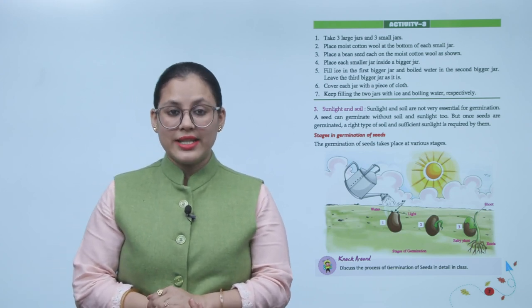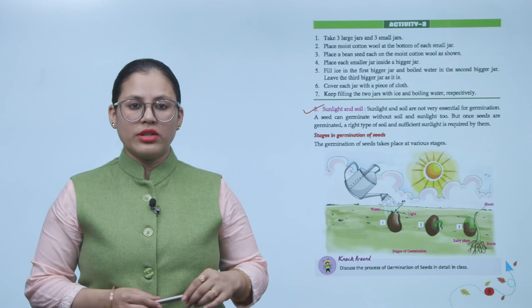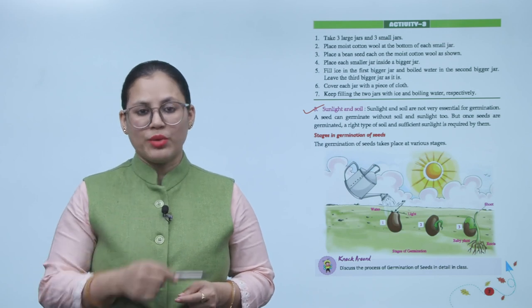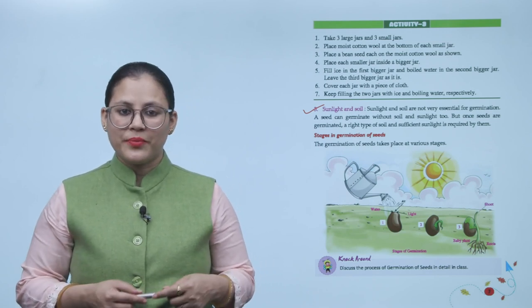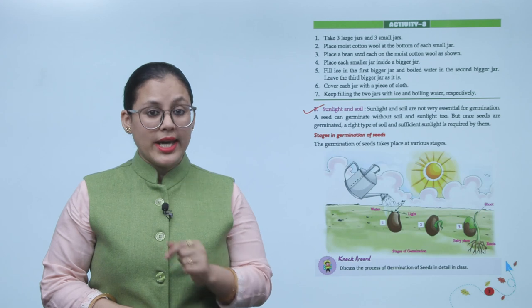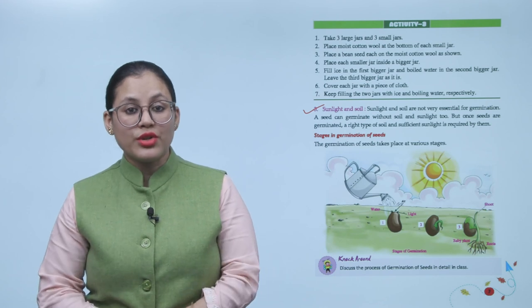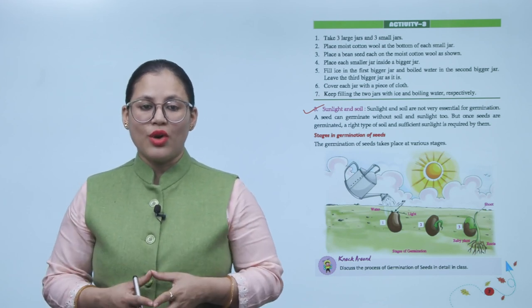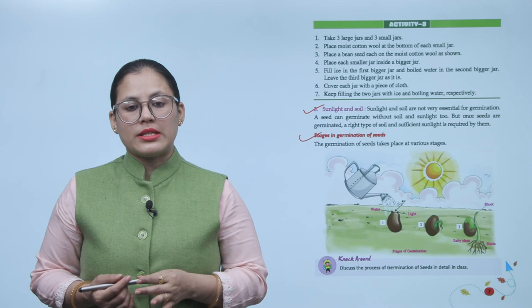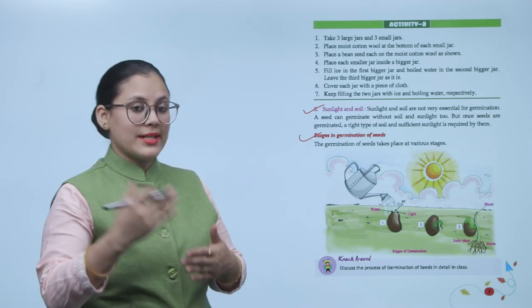Third requirement is sunlight and soil. Sunlight and soil are not very essential for germination. A seed can germinate without soil and sunlight too. But once seeds are germinated, the right type of soil and sufficient sunlight is required by them. Germination ke liye ye bahut important nahi hai, but as the seed germinates, seed needs the right type of soil and sunlight in sufficient quantity. Stages in germination of seeds: The germination of seed takes place at various stages.